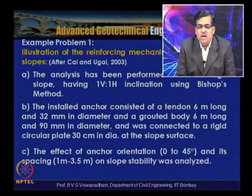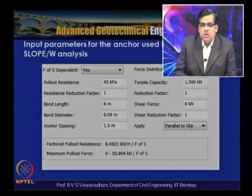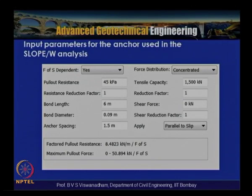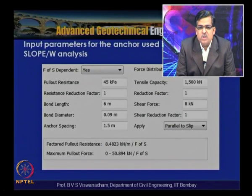The study investigated the optimum spacing and the effect of anchor spacing on slope stability. The input file for Slope W used tensile capacity equivalent to 1500 kilo-Newtons, bond diameter of 90 mm, grouted bond length of 6 meters, and anchor spacing of 1.5 meters. Factored pullout resistance and maximum pullout resistance ranges were also specified.